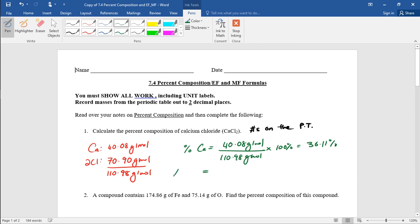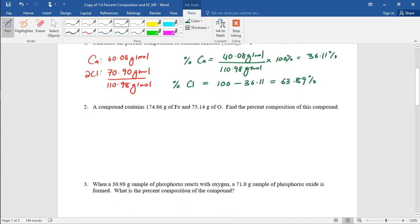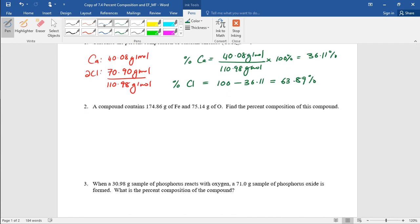Now in order to find the percent of chlorine, what we have to do is subtract the mass of calcium from 100. That will give you the rest of it, and that will be 63.89% chlorine. So that is percent composition. When no numbers are given, you get them from the periodic table. Now let's look at the second question.